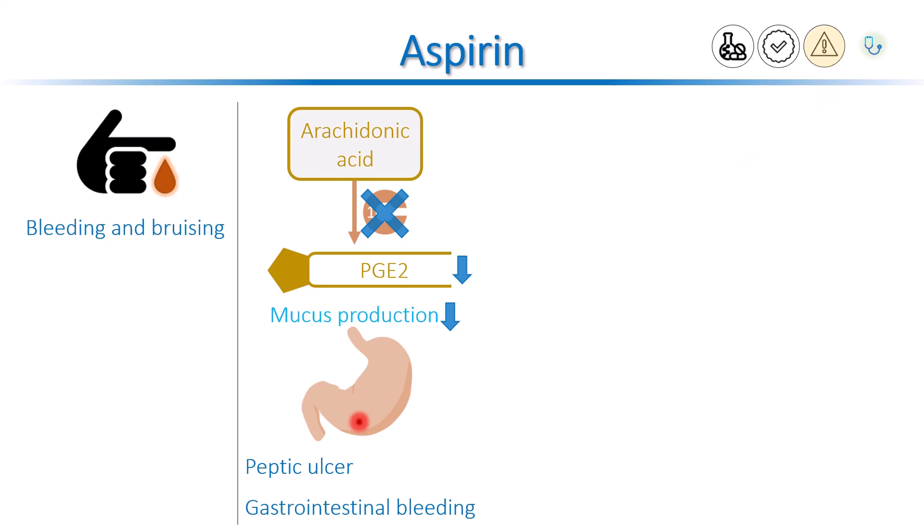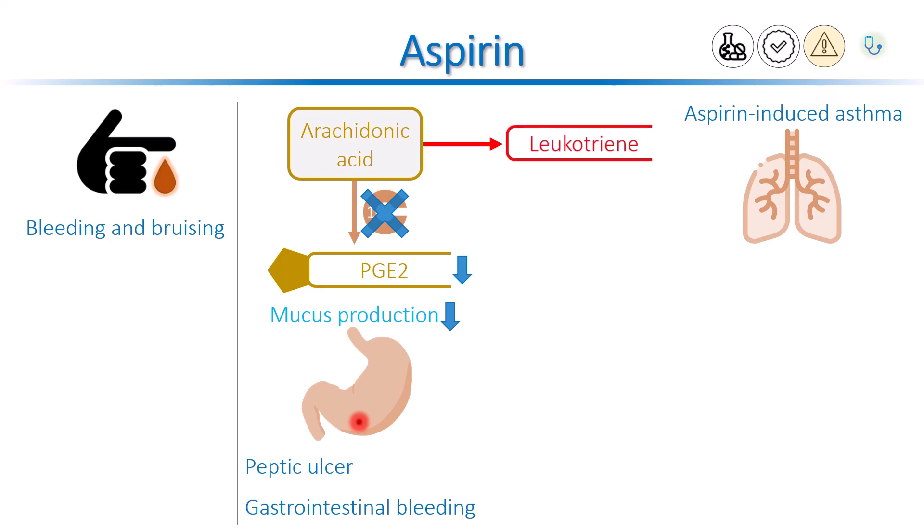Some patients with asthma experience bronchospasm following ingestion of aspirin, also known as aspirin-induced asthma. Asthma patients with chronic rhinitis or a history of nasal polyps are at greater risk. Aspirin inhibits the cyclooxygenase pathway, blocking the formation of prostaglandins from arachidonic acid. There is another pathway where arachidonic acid is converted to leukotrienes, helped by another enzyme called lipoxygenase.